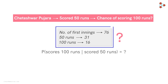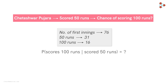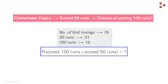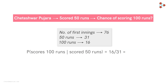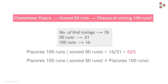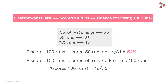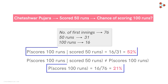Now, what can we do with this data? This data can help us predict the likelihood of whether he will score a century in the ongoing first innings after scoring 50 runs. The probability that he will score 100 or more runs given that he has scored a half century is simply 16 by 31, where 31 is the total number of times he scored a 50 in the first innings and 16 is the number of times he converted those 50s into 100s. The probability is approximately equal to 52%. The probability of Pujara scoring 100 given that he has scored 50 in the first innings is not equal to the probability of Pujara scoring 100 in the first innings, which is given by 16 by 76, that is 21%. Thus, we can see that both these probabilities are different.